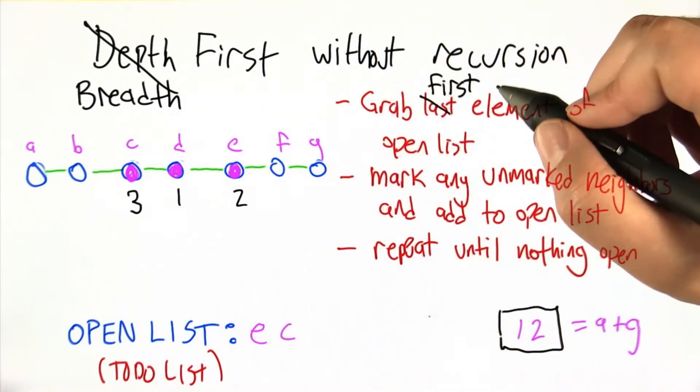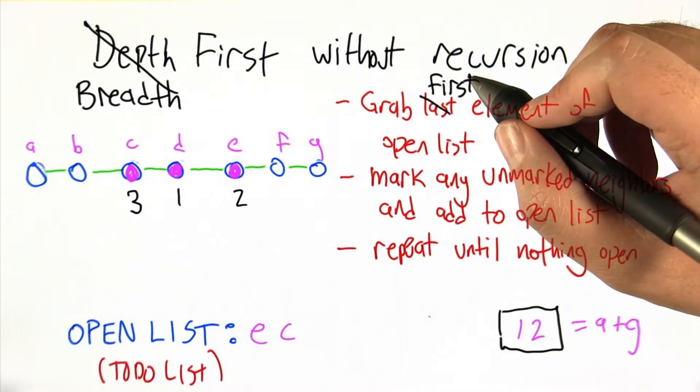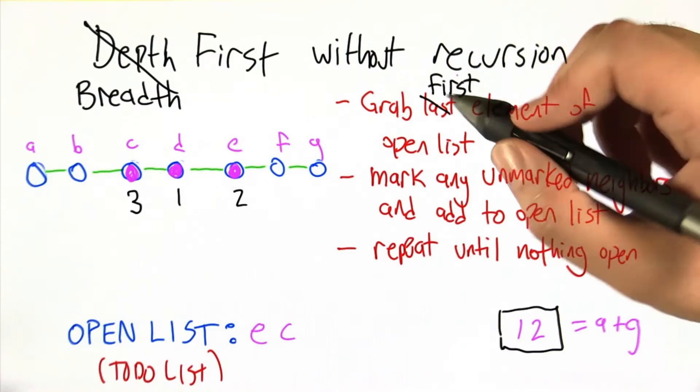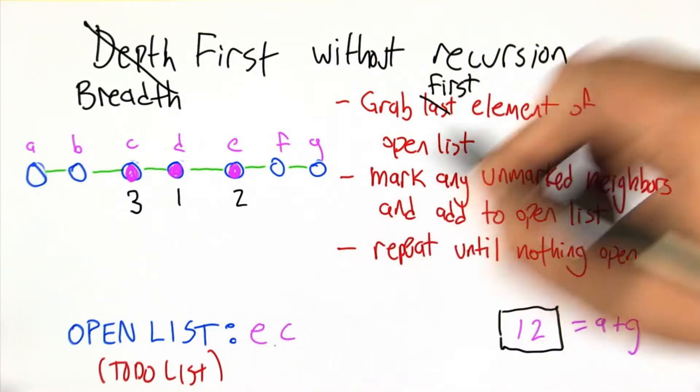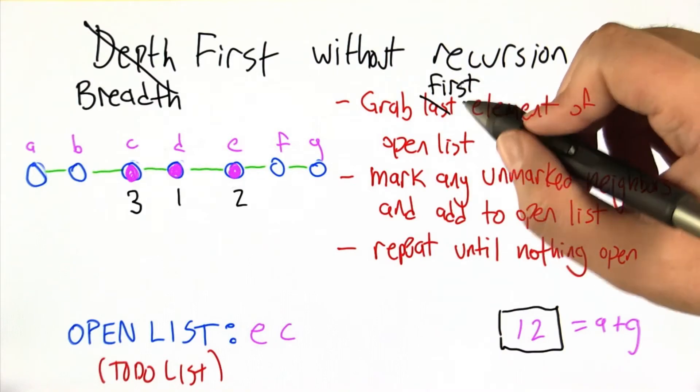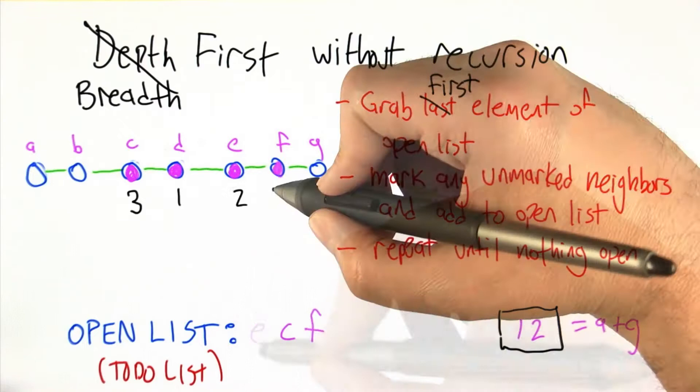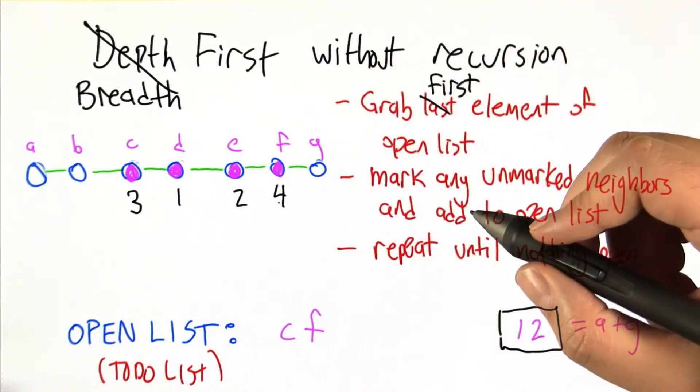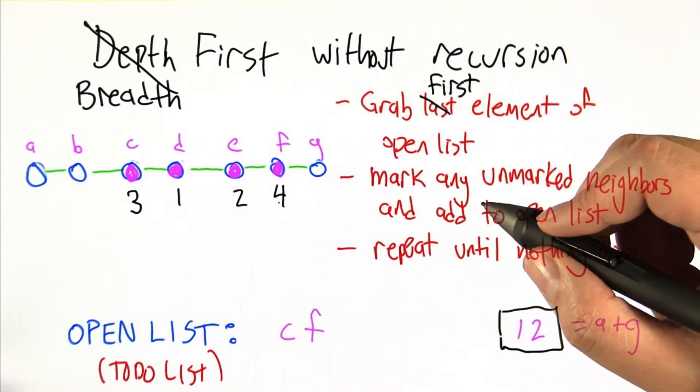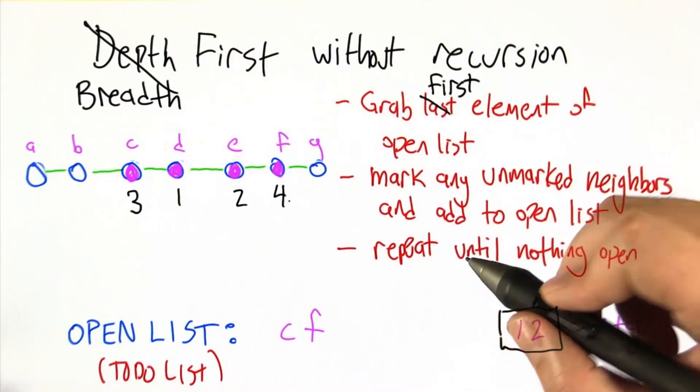And now we go back up to the top and things get a little different. This time, actually not that different. The order was sort of arbitrary and so first and last are sort of arbitrary. But we're going to grab the first thing off the list, just like the instructions say, and that's E. Add its neighbors in. The neighbors still get added to the end of the list. So that's a little different in terms of the numbering so far.